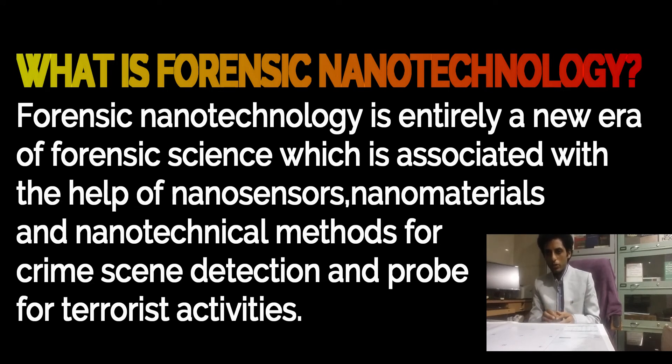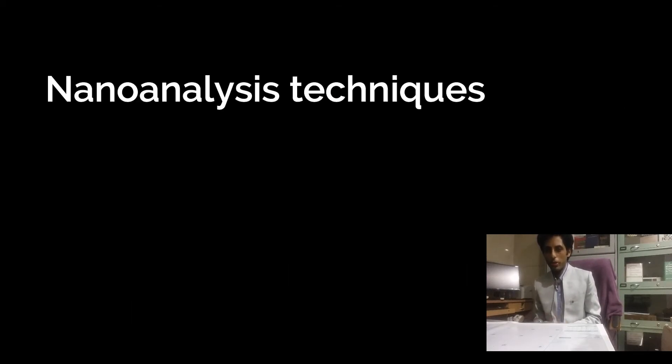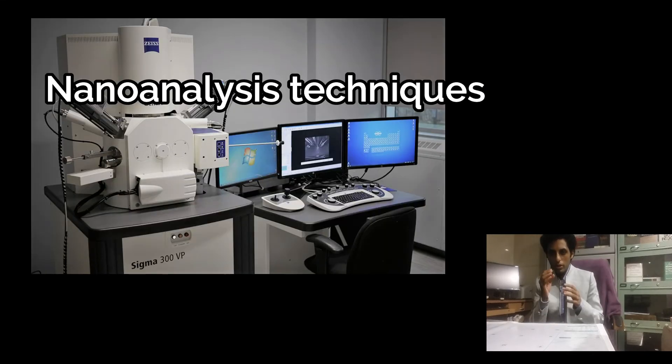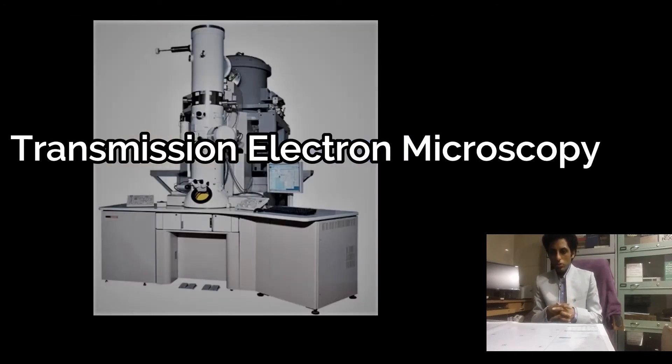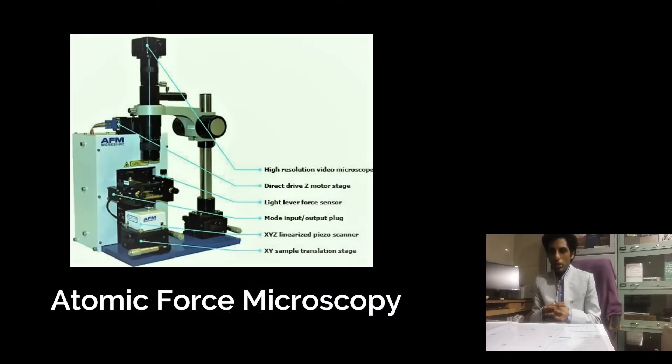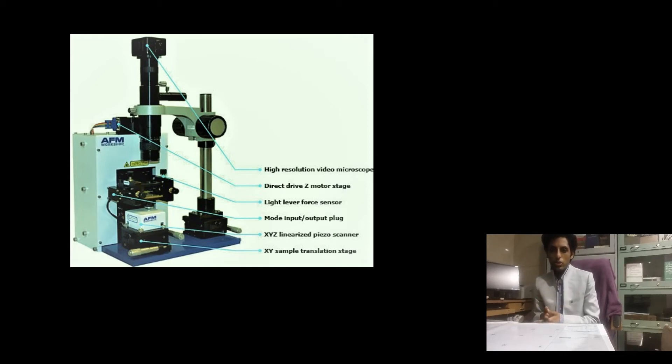Forensic nanotechnology is entirely a new era of forensic science which is associated with the help of nanosensors, nanomaterials, and nanotechnical methods for crime scene detection and prompt for terrorist activities. Some of the nano-analysis techniques that are employed in aiding crime detection are scanning electron microscopy, transmission electron microscopy, atomic force microscopy, dynamic light scattering, and Raman microscopy.